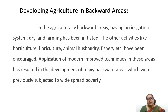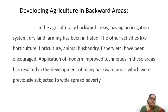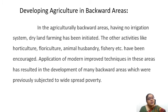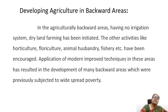Developing agriculture in backward areas — in certain backward areas where there is no irrigation system, dry land farming has been initiated. Other allied activities like horticulture, floriculture, animal husbandry, and fishery have all been encouraged in these areas. The application of modern improved techniques has resulted in the development of many backward areas, which were previously subject to widespread poverty.